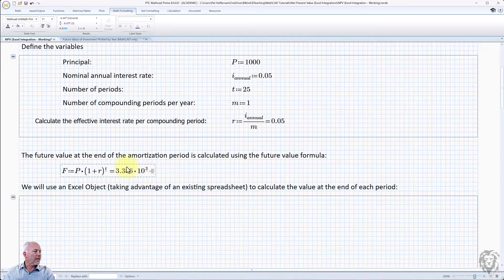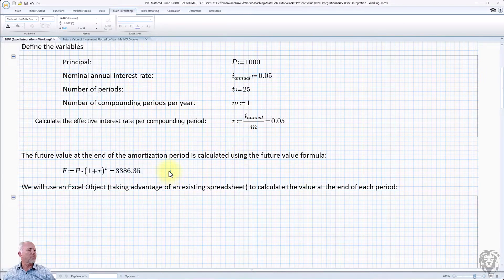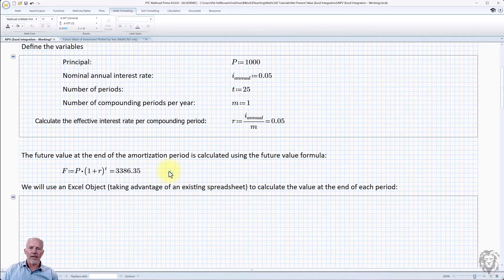And we hit equals and we see we get the - oh, look at math formatting. Here's an example where the math formatting may not make sense for you. I want a decimal number. There we go. And so we get $3,386.35, which is what you would have at the end of the 25 year period from your thousand dollar investment.